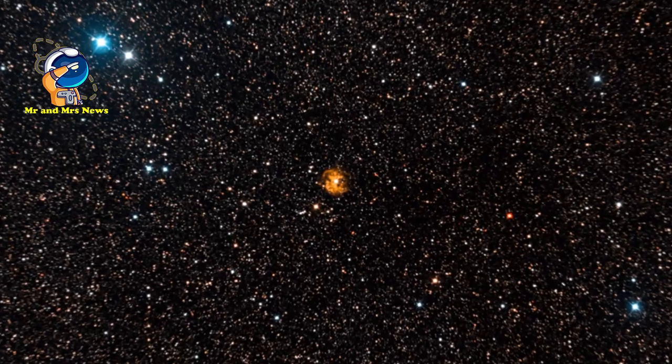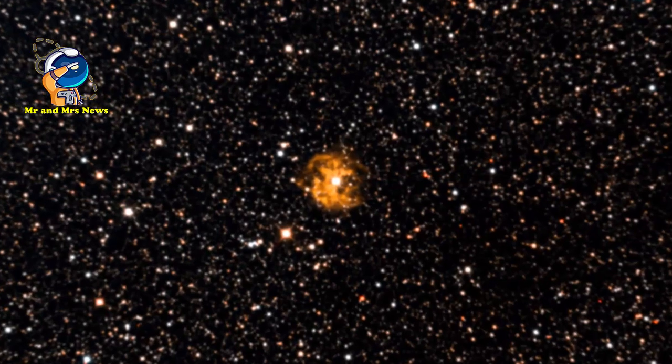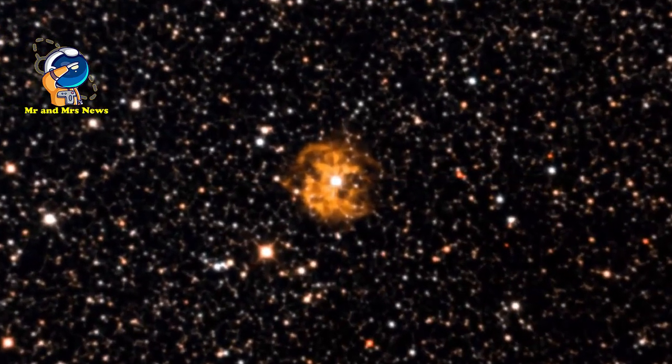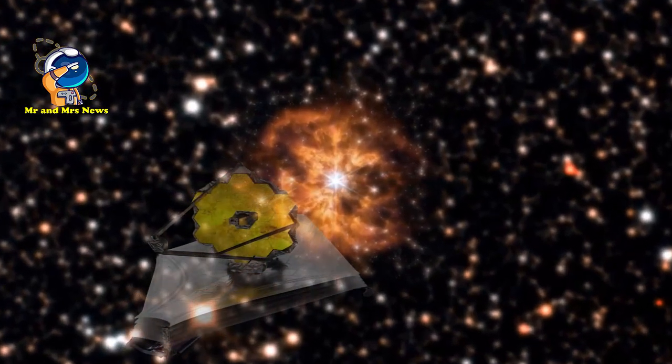Penampakan langkah bintang Wolf-Rayet di antara bintang paling terang, paling masif, dan paling singkat terdeteksi adalah salah satu pengamatan pertama yang dilakukan oleh teleskop antariksa James Webb milik NASA pada Juni 2022.